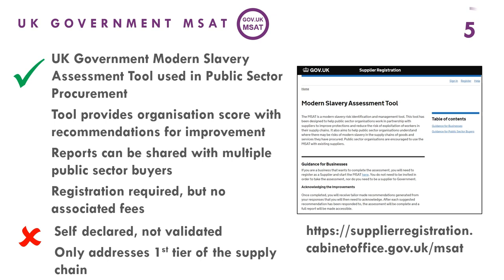The UK government's Modern Slavery Assessment Tool is used for public sector procurement. Organizations that complete it will receive a score and recommendations for improvement. Reports can be shared with multiple buying organizations. Registration is required, but this is free of charge. You do not need to be invited in order to take the assessment, nor do you need to be a supplier to government to participate.